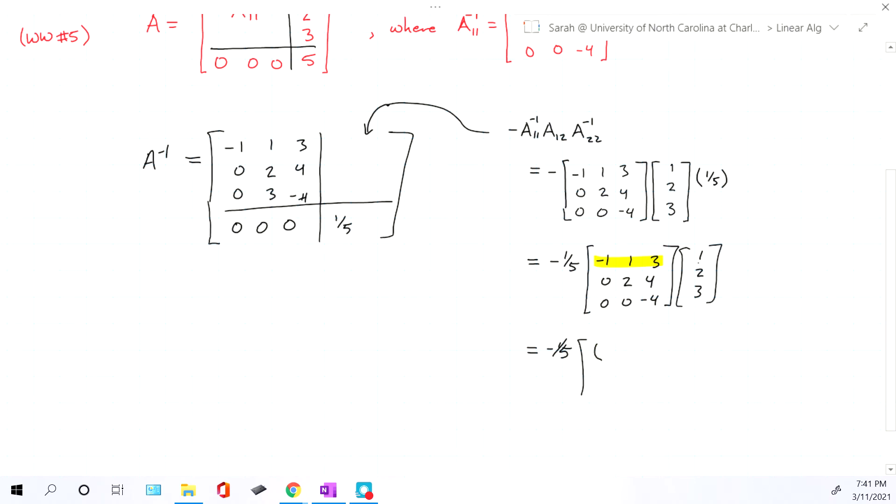So we have negative one times positive one, which is just negative one. We have positive one times two, which is just two. We have three times three, which is nine. Now we'll still figure out what that value is, but we'll do that in a second.